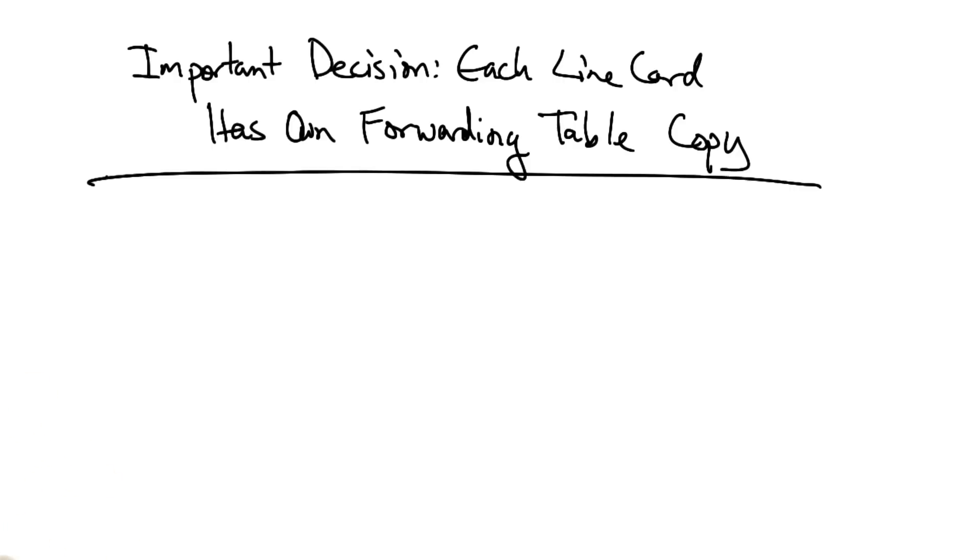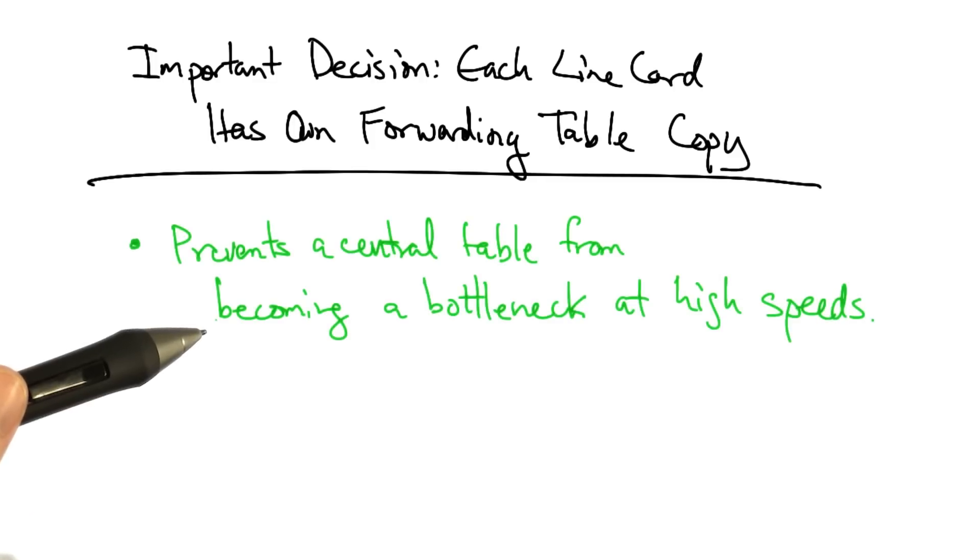One important decision in the design of modern routers was to place a copy of the forwarding table on each line card in the router. While this introduces some complications in making copies of the forwarding table, doing so prevents a central table on the router from becoming a bottleneck at high speeds.